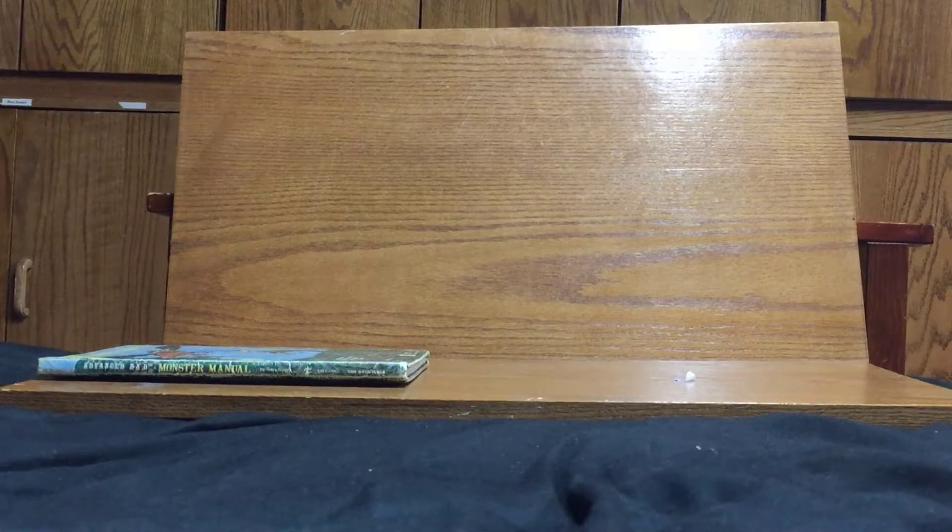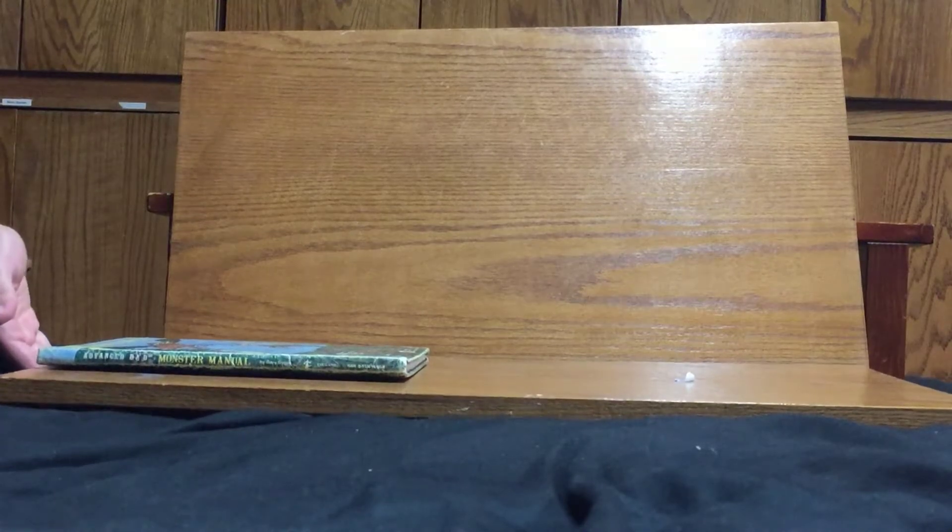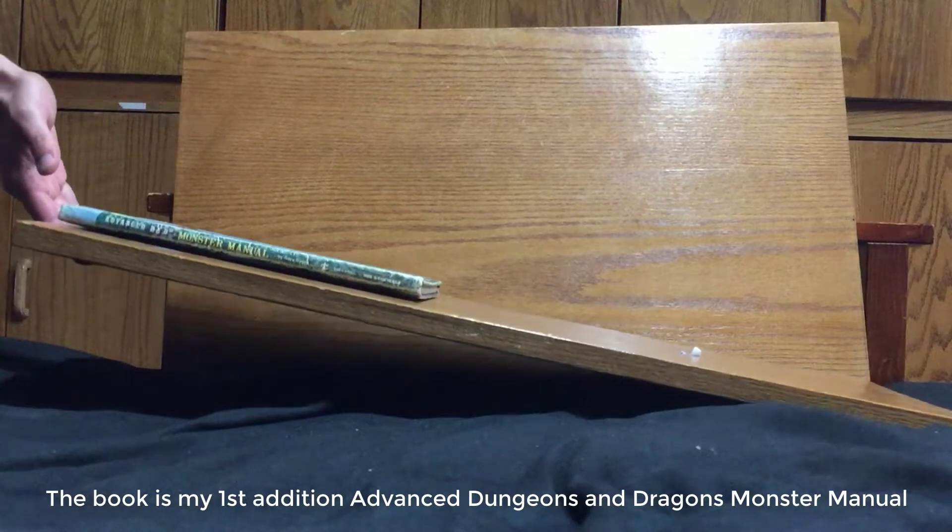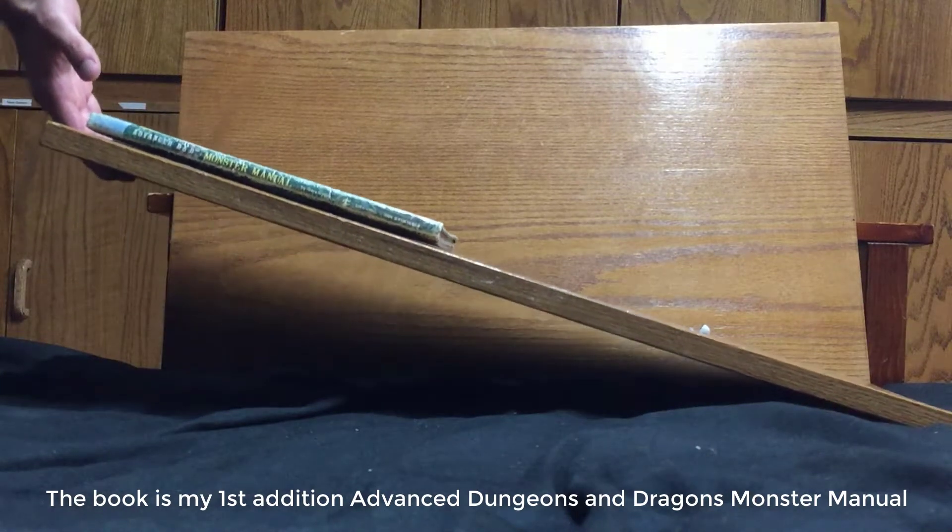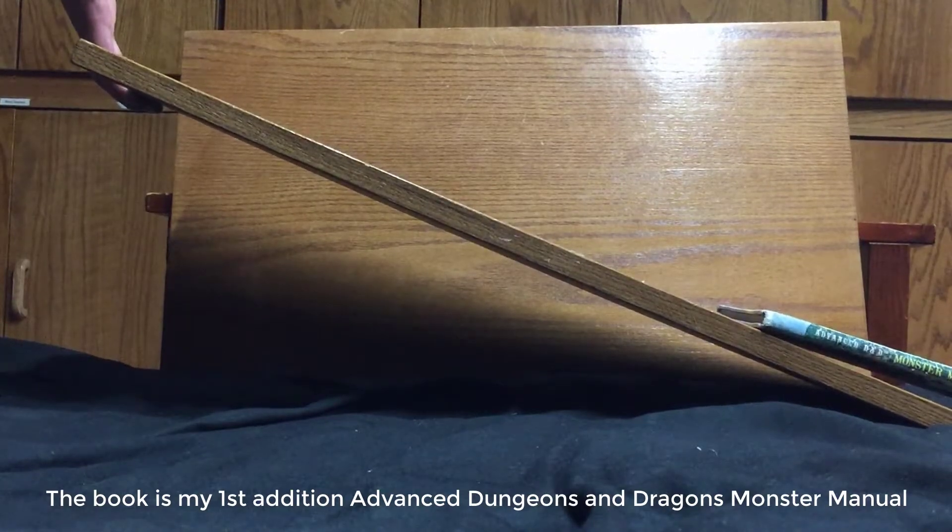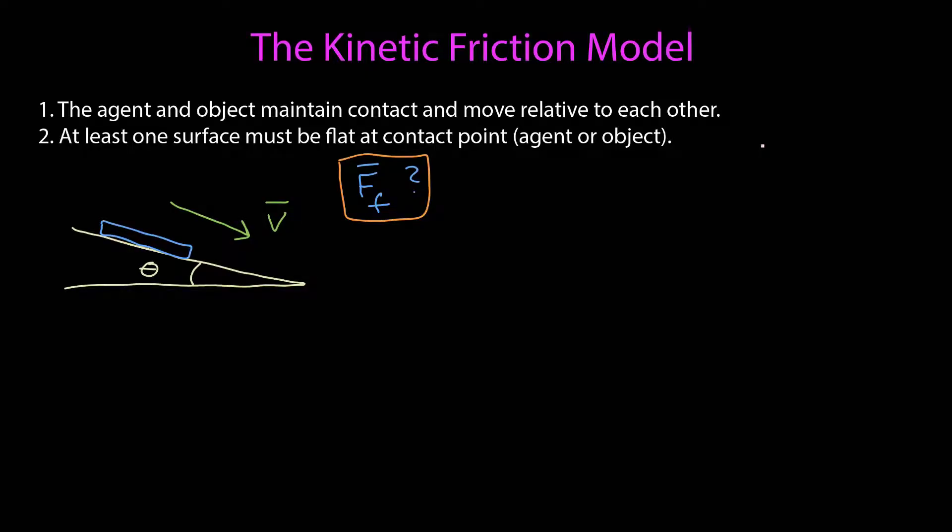Let's watch a video of something experiencing kinetic friction. We saw a book being lifted up. It wasn't moving at the beginning, but eventually it slid down the incline. As it was sliding, we could apply our kinetic friction model, but not before.